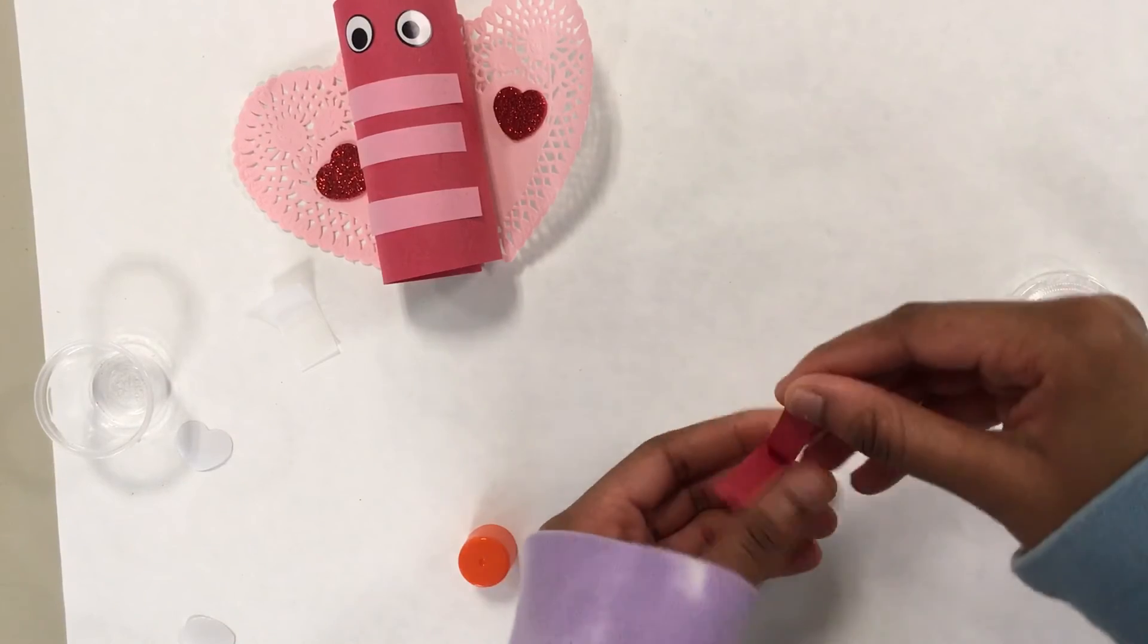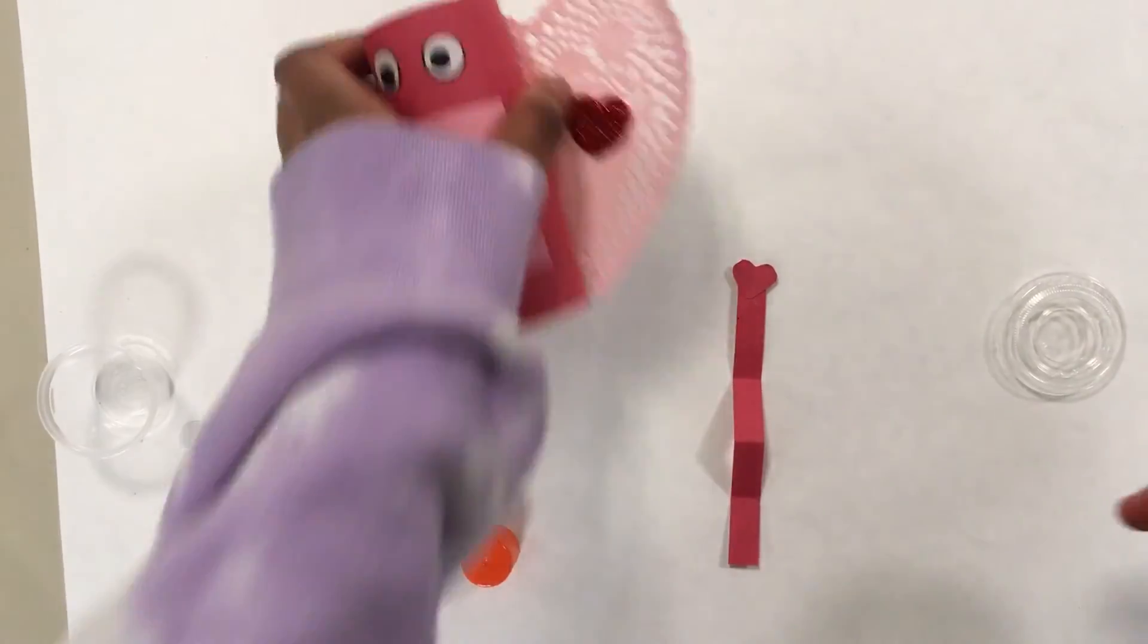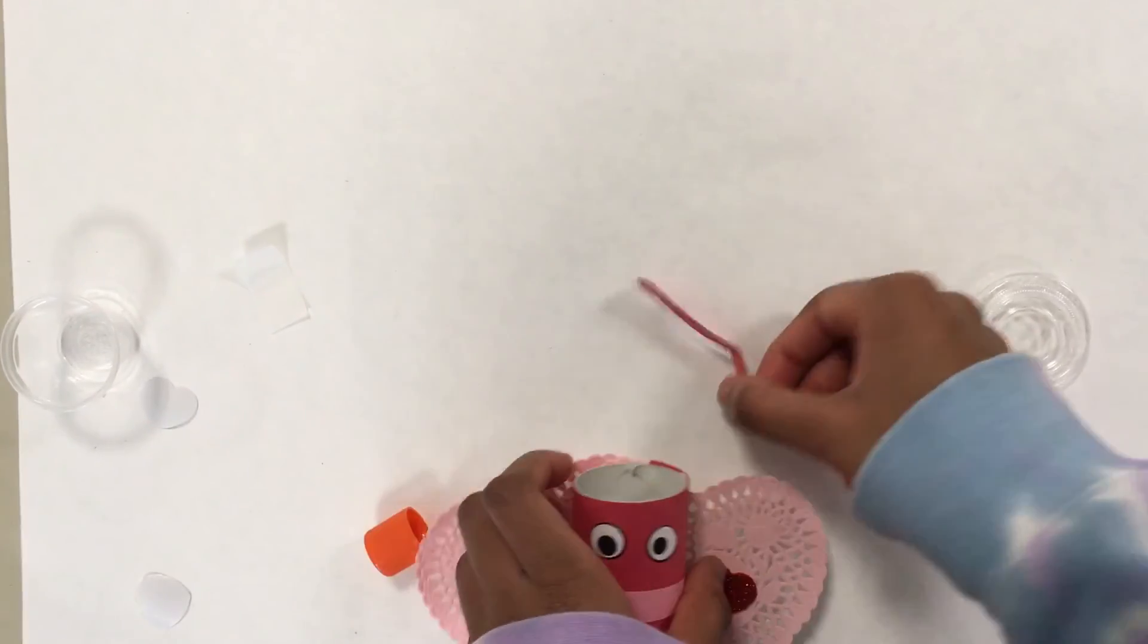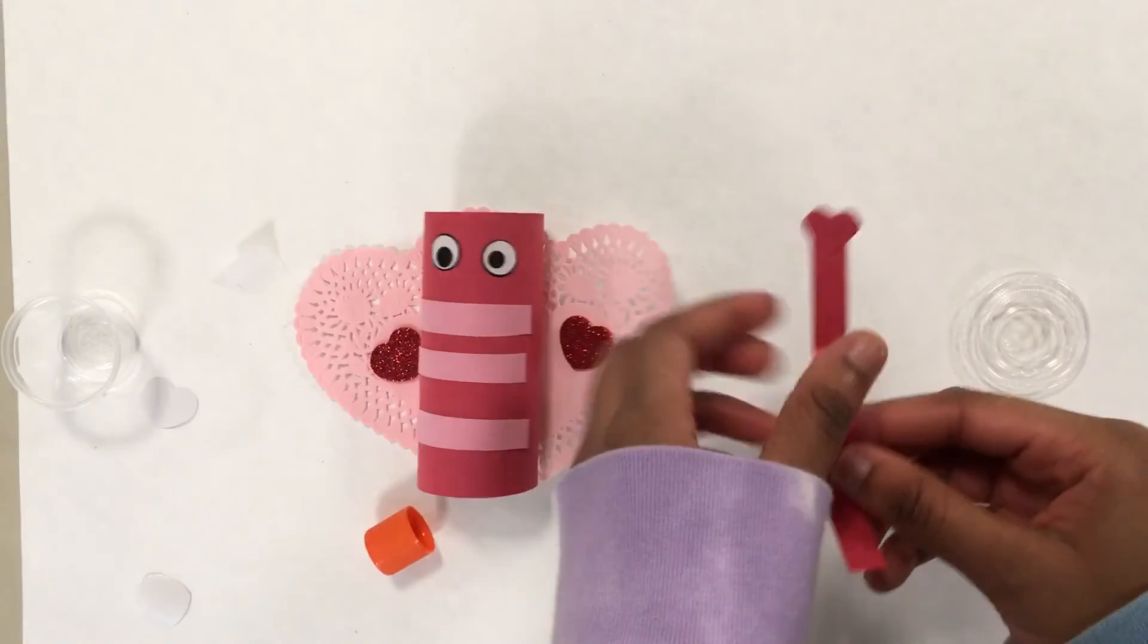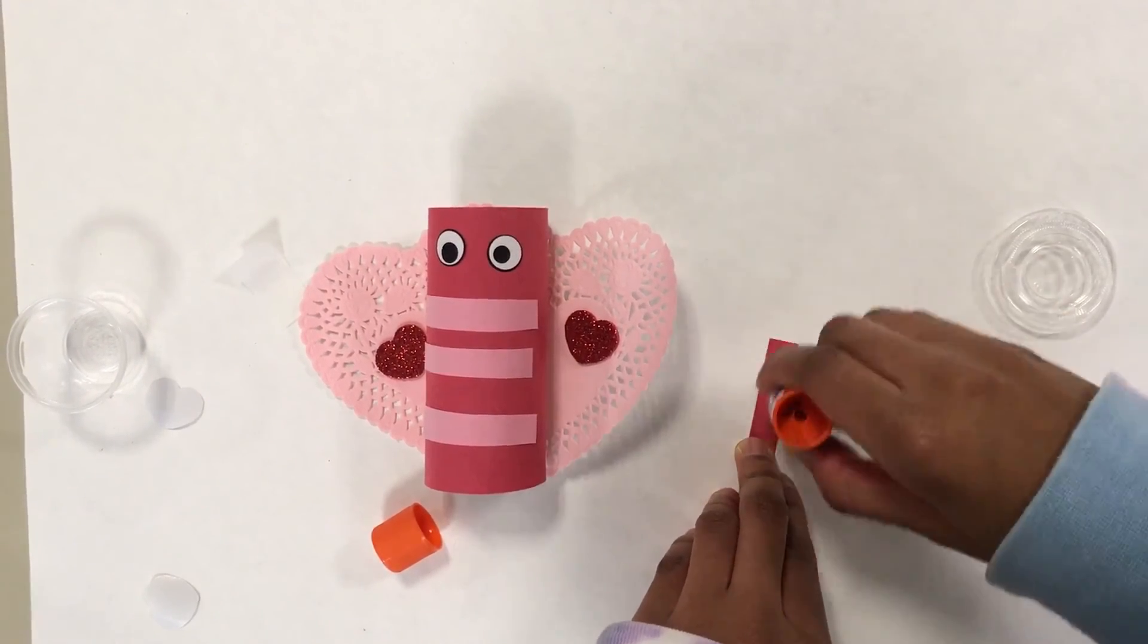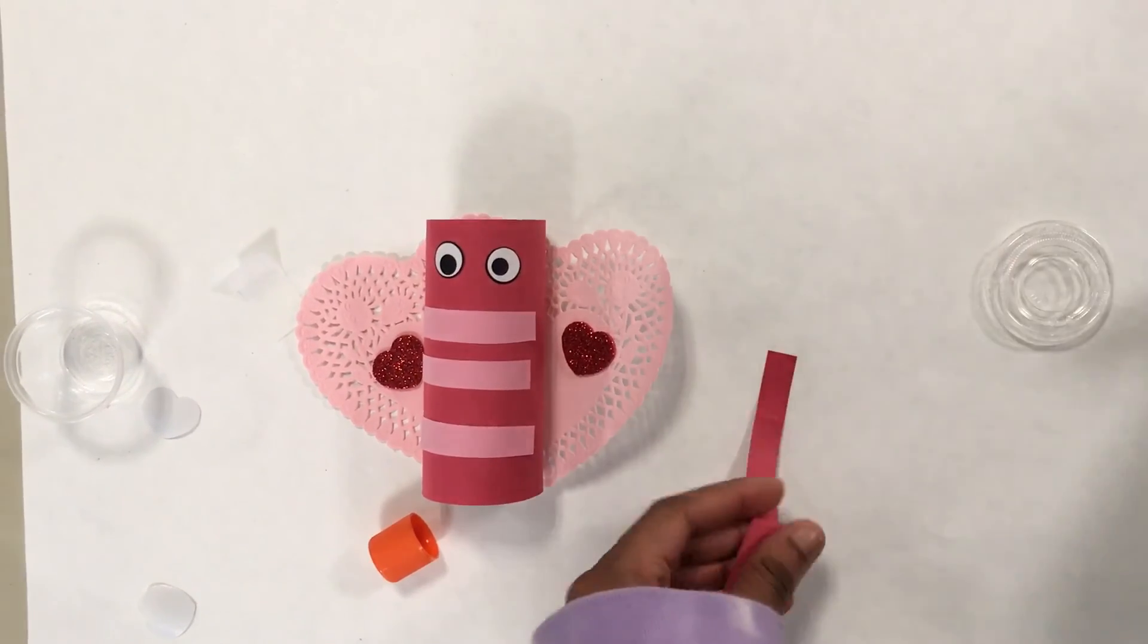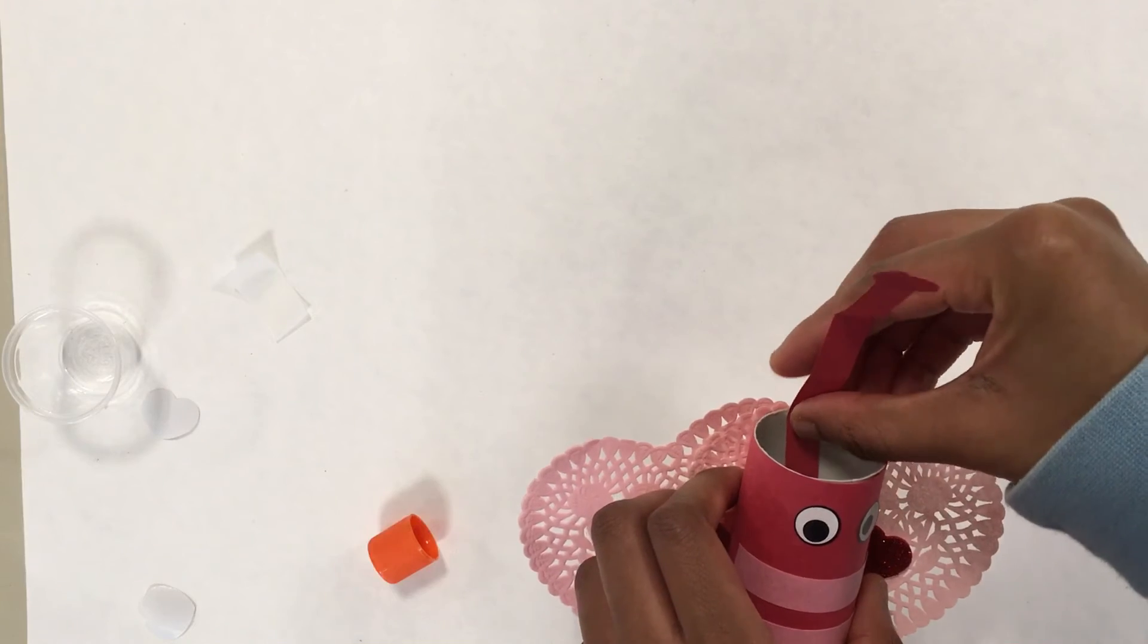There we go, so you fold it three times and it will look like this. So now we grab our craft and we're going to put it right here, so we glue the paper. Let me put it right here.